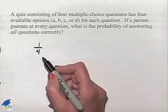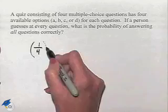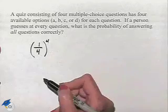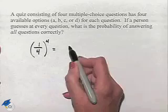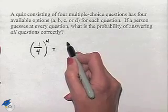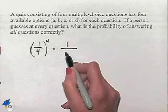We're going to be doing this for four different questions, so we're going to have one-fourth multiplied times itself four times, or one-fourth to the fourth power. We can evaluate this by taking one to the fourth power, which would be one, divided by four to the fourth power, which is 256.